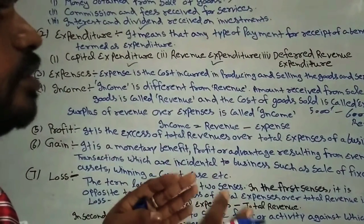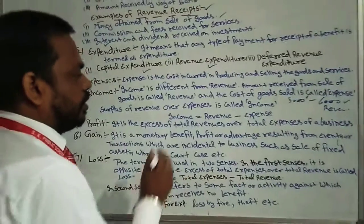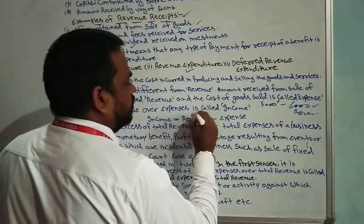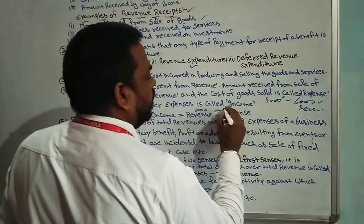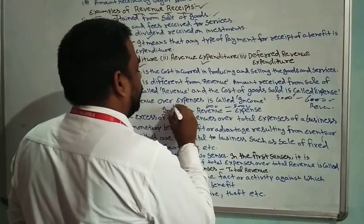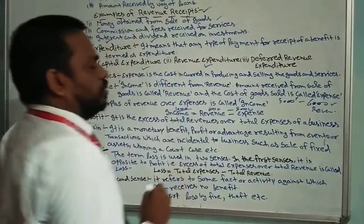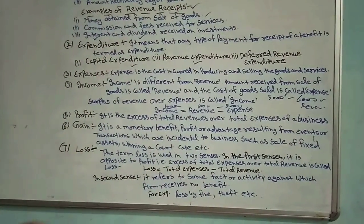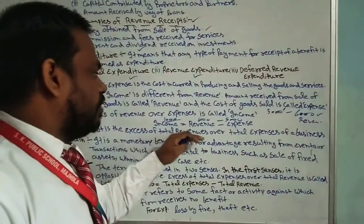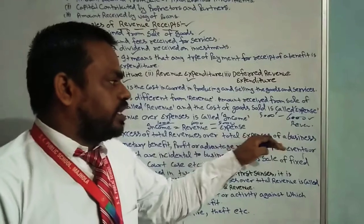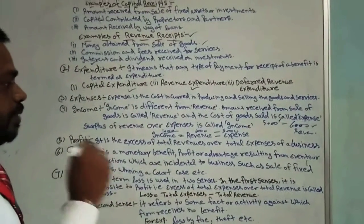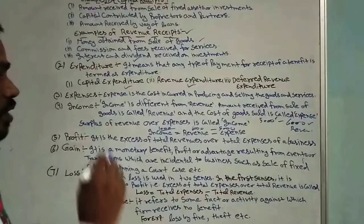The next point is profit. Profit is the excess of total revenue over total expenses of a business. Total revenue here means not just the amount from selling particular goods, but the total revenue — including interest received, rent received, and any other such items — that is called total revenue.